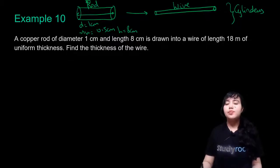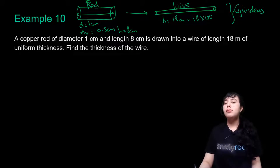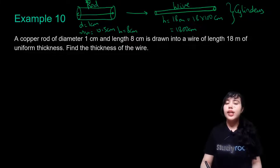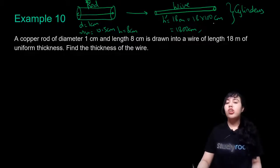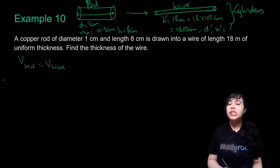The wire has length (height) h′ = 18 m. Since other quantities are in cm, convert: 18 × 100 = 1800 cm. We want to find the thickness of the wire, meaning its diameter d′ or radius r′. Using the principle of conversion: volume of rod = volume of wire. Both are cylinders, so πr²h = πr′²h′. The πs cancel.